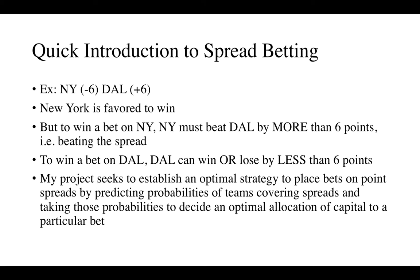A quick introduction to what spread betting is — for more details the internet is a great resource. For example, if you have New York minus 6 and Dallas plus 6, New York is favored to win. But to win a bet on New York, they have to beat Dallas by more than 6 points. If Dallas loses by less than 6 or wins, you win the bet on Dallas.